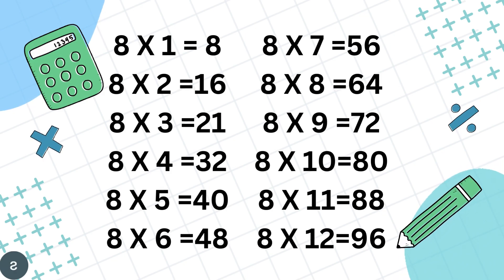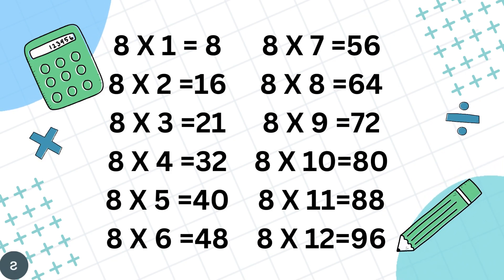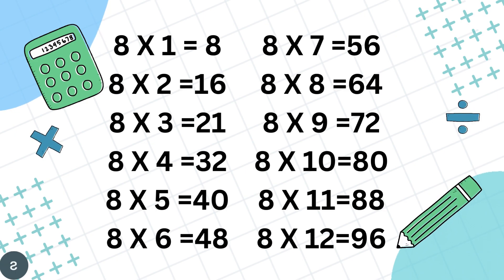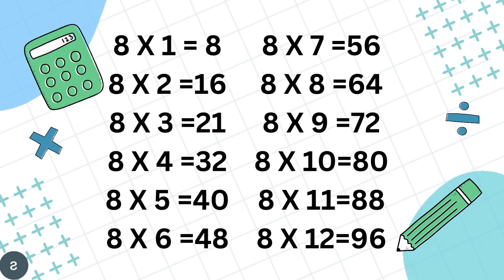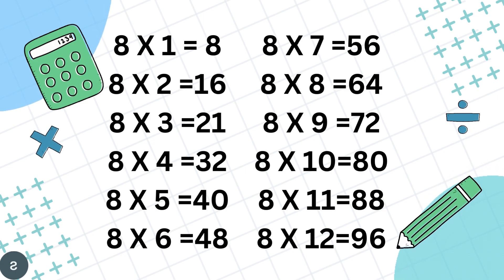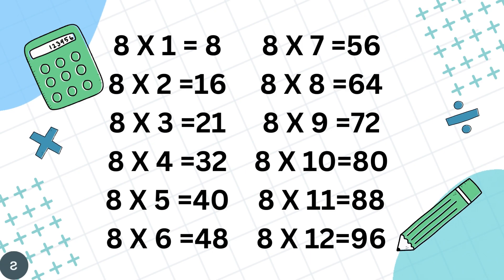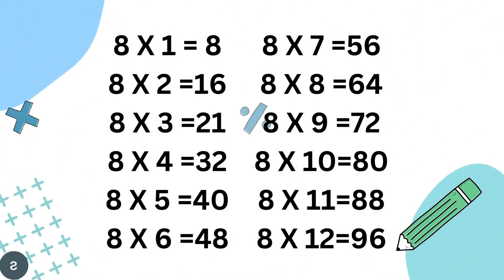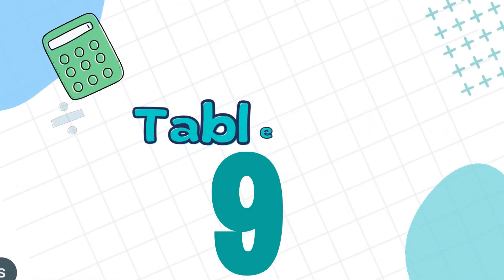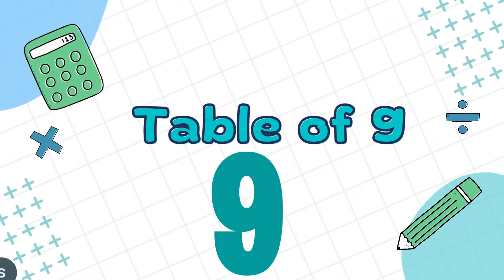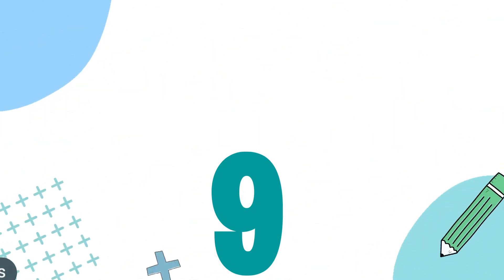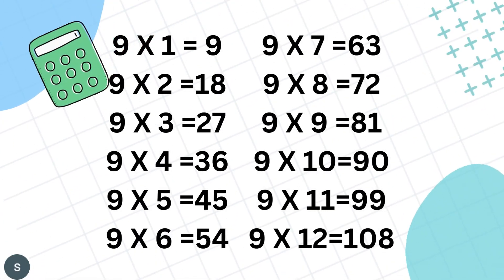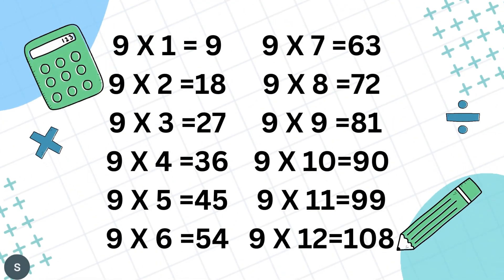8 7's are 56, 8 8's are 64, 8 9's are 72, 8 10's are 80, 8 11's are 88, 8 12's are 96.